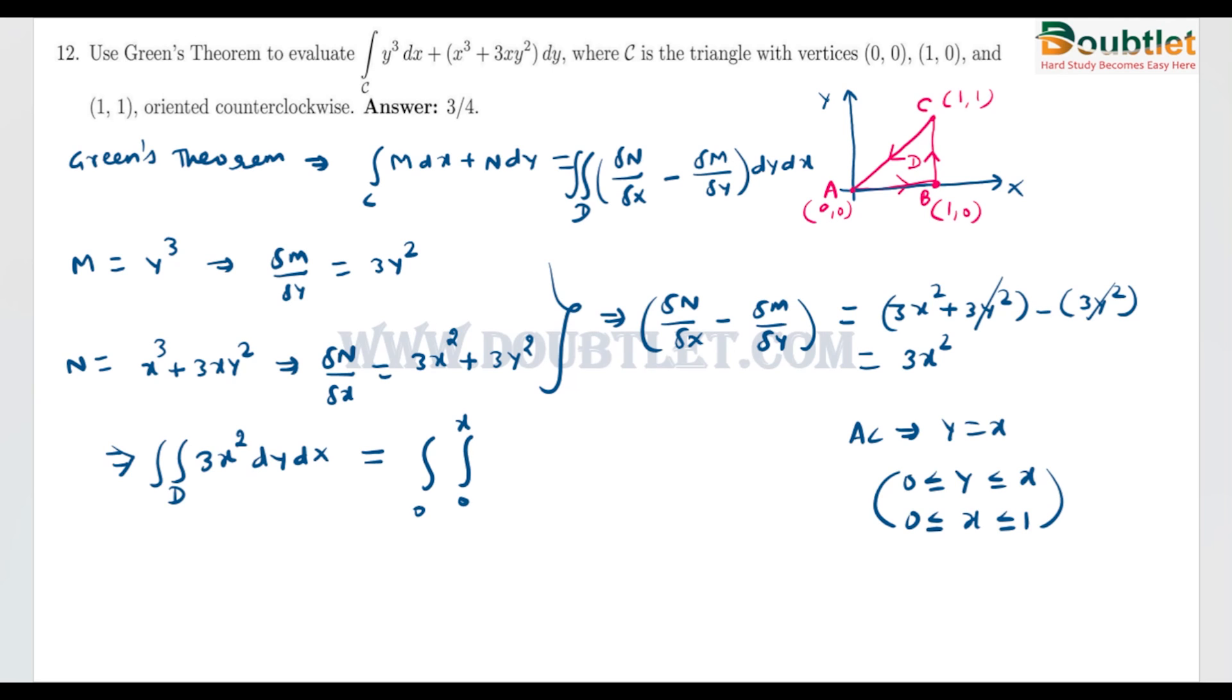This will be from 0 to x, this will be from 0 to 1, and this is 3x² dy dx. First we have to integrate this integral with respect to y, assuming x is constant. Then dy integration will be y, and if we put the limit, it will become 3x² multiply by x.